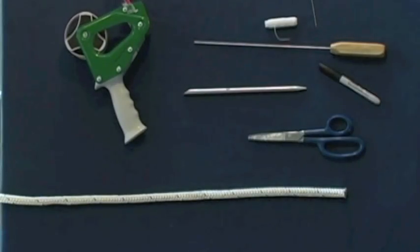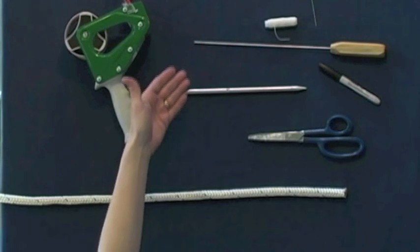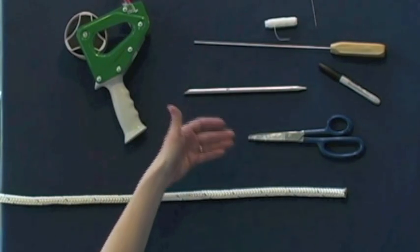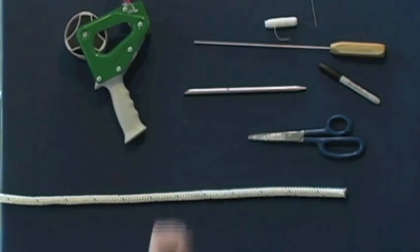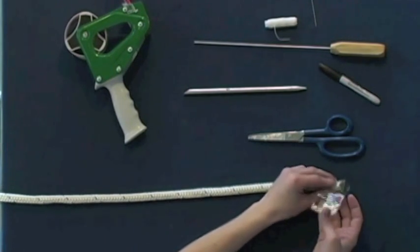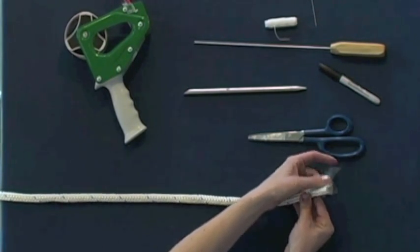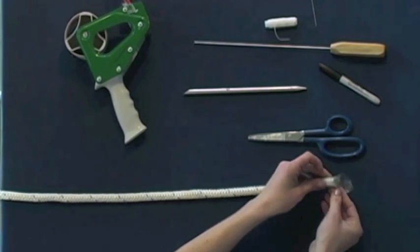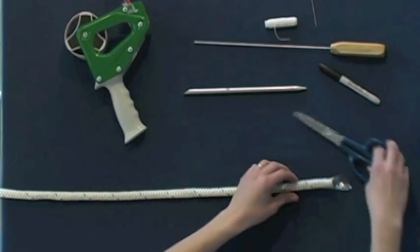Using the same tools as you used in your class 1 double braid eye splice, we will start a class 1 double braid end splice. Taking a piece of tape, wrap the end of your rope, take your scissors and cut the melted end off.